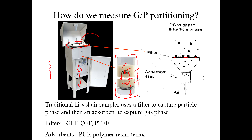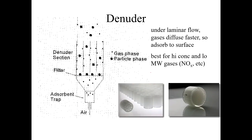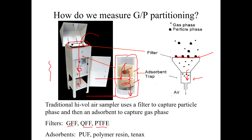First particles are caught on the filter and then the gas phase goes through the absorbent trap. Filters can be glass fiber filters (GFFs), quartz fiber filters (QFFs), or Teflon; absorbents can be polyurethane foam, polymer resins, or XAD. This approach works well for semi-volatile chemicals including PCBs, PAHs, and dioxins. For lower molecular weight, more volatile chemicals with higher vapor pressures, the high vol doesn't work well because those compounds won't get caught on the filter and tend to break through the absorbent puff.